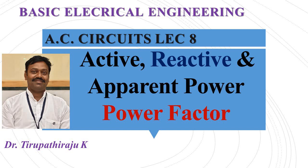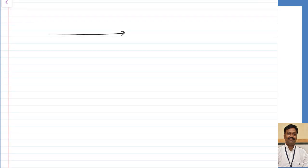Before proceeding, let us see that practically if you take any circuit, the circuit will have inductive loads only. The inductive load will be a combination of an inductor in series with a resistor. If I am taking my voltage as my reference, the current passing because of the inductive load will lag behind this voltage by some angle phi.